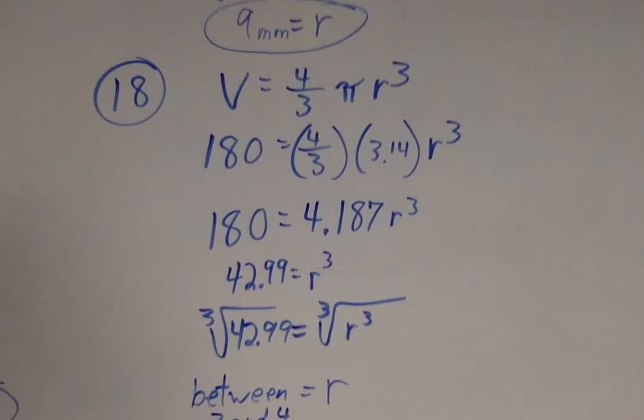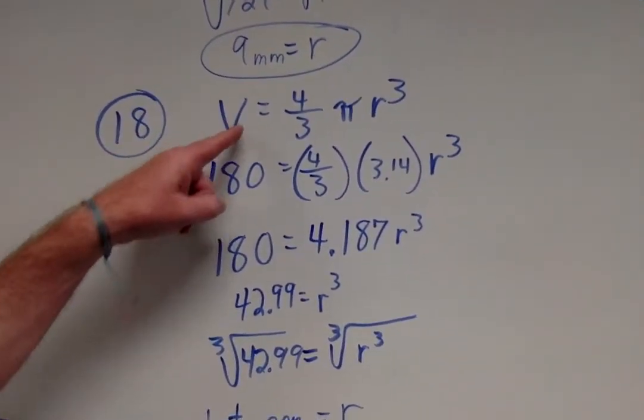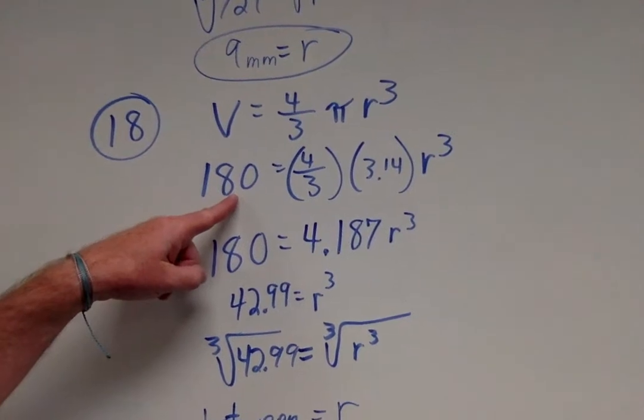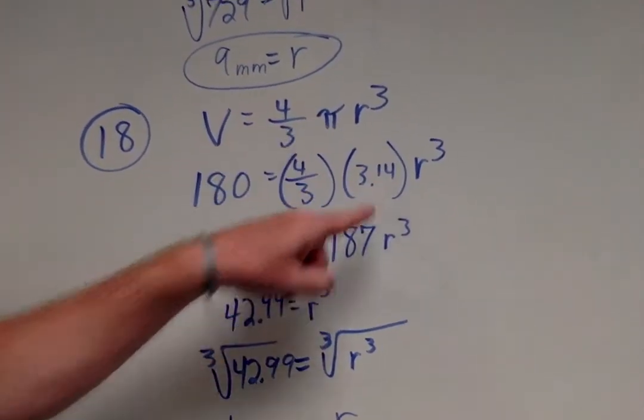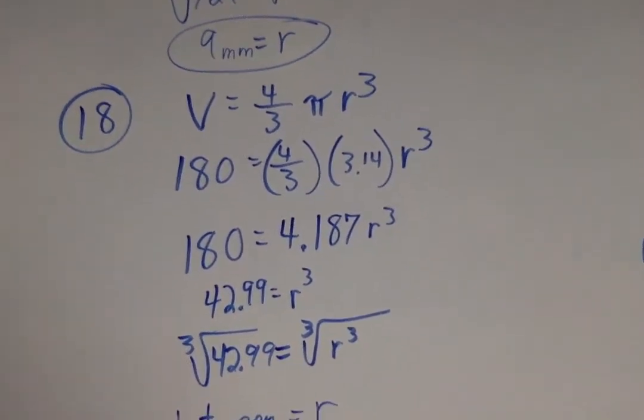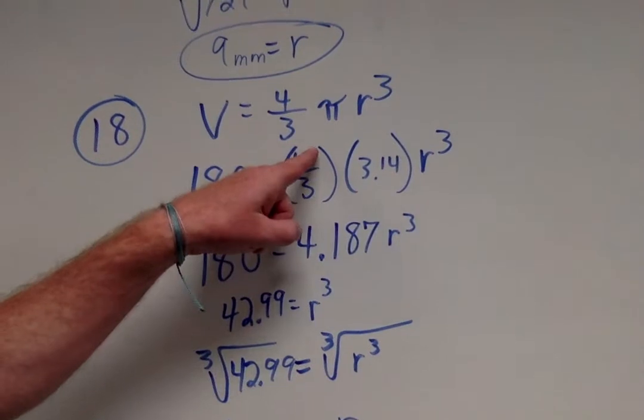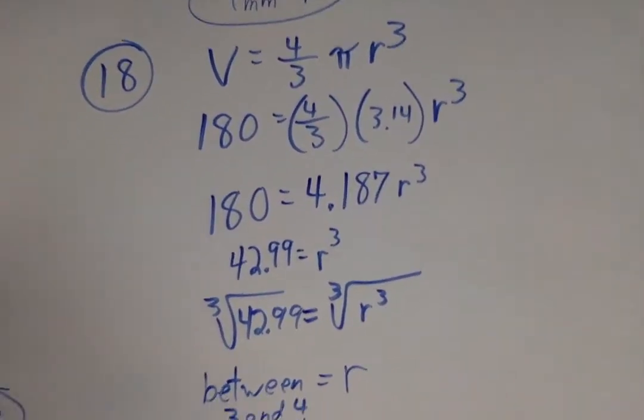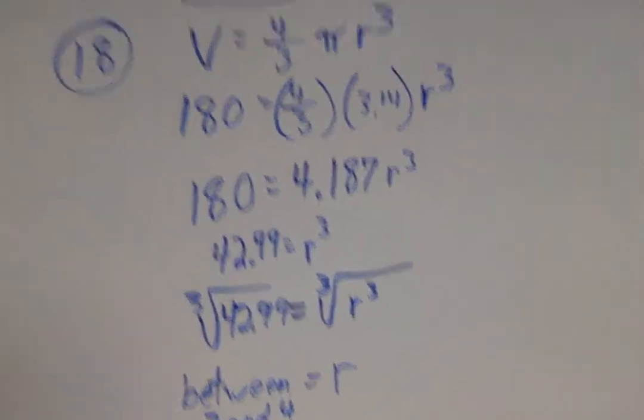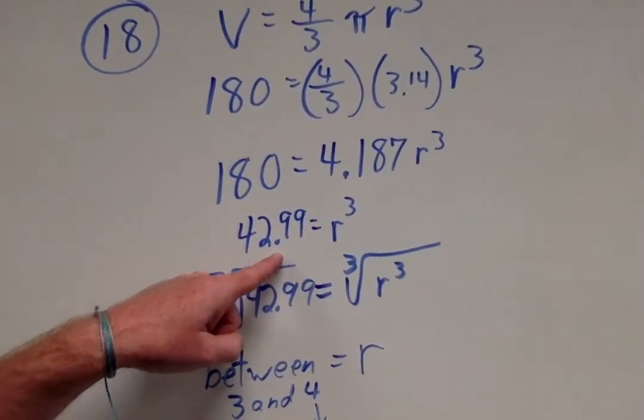Number 18! Alright! Same thing! Except now they're not giving me pi on this area or the volume of this sphere! So, I had to replace pi with 3.14! In this particular instance, everybody, I do believe I multiplied 3.14 times 4 divided by 3! And I got something really close to a 4.187!